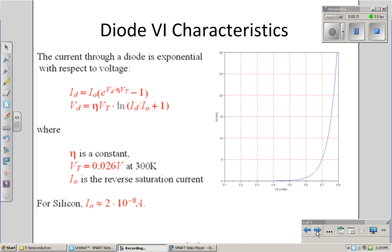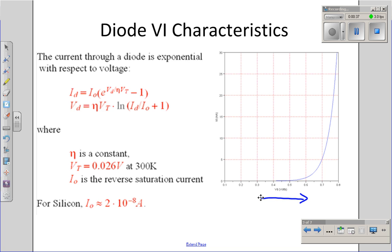The VI characteristics for a diode are exponential in nature. As the voltage increases, the current goes up exponentially.